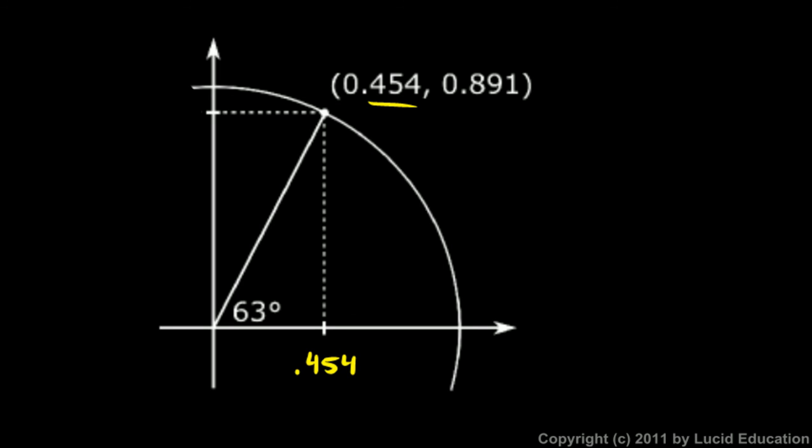That number can also be thought of as a particular location on the x-axis. And the y value here, 0.891, that would correspond to this position on the y-axis, 0.891.